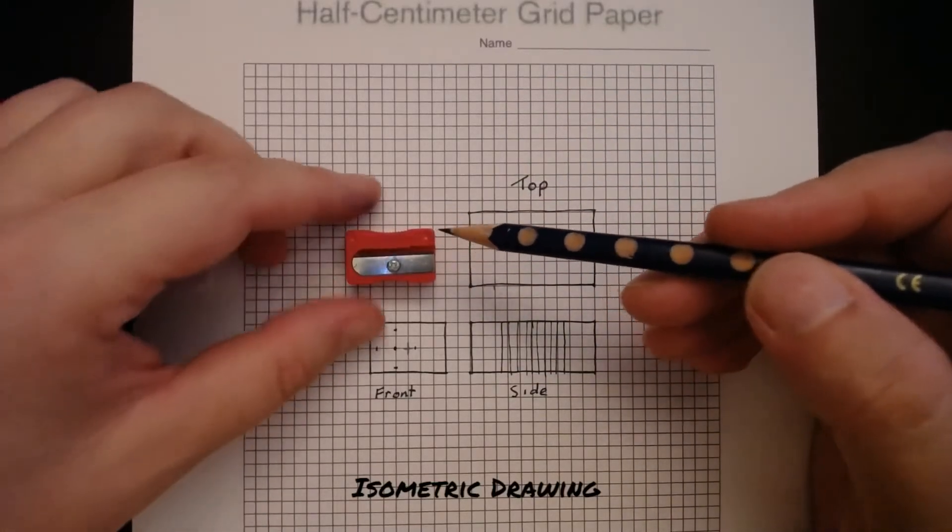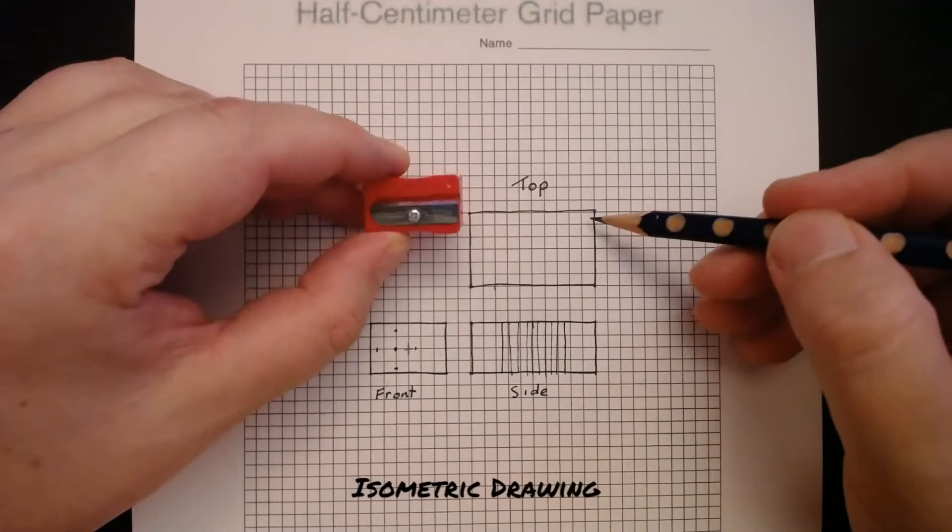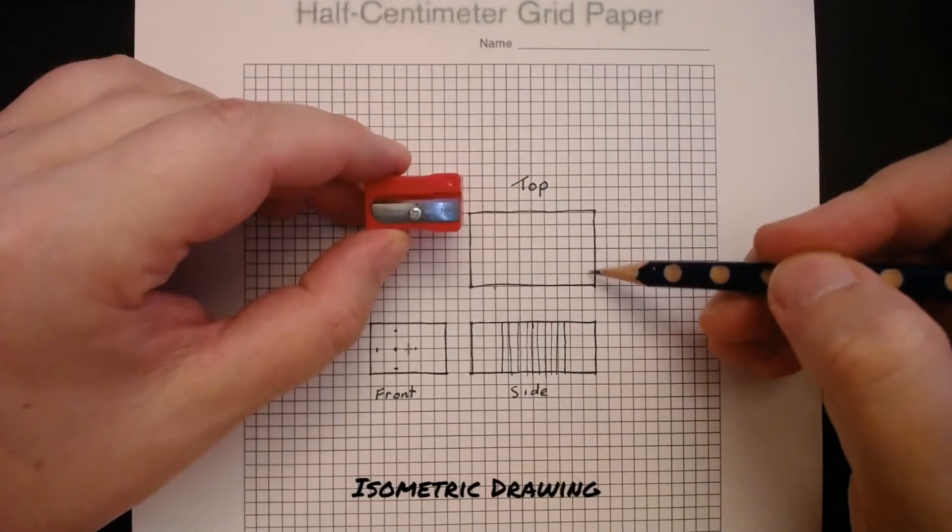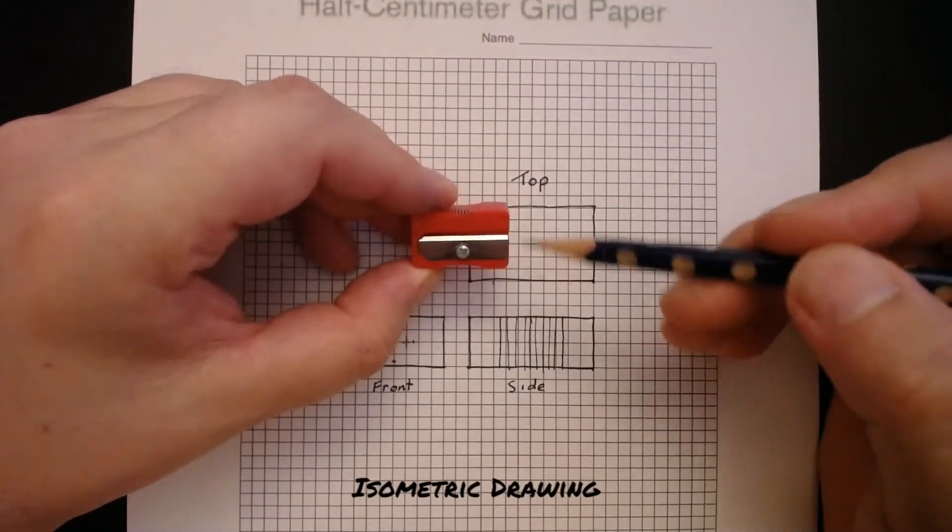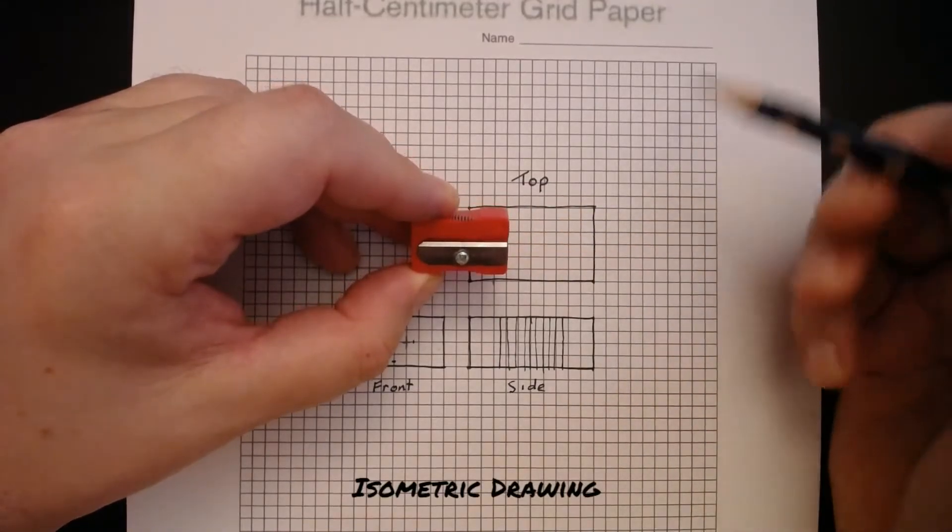So having a look at the top of this pencil sharpener, we know we've got one, two, three, four, five, six boxes. So again, that's an even number, so we know we've got a halfway line.